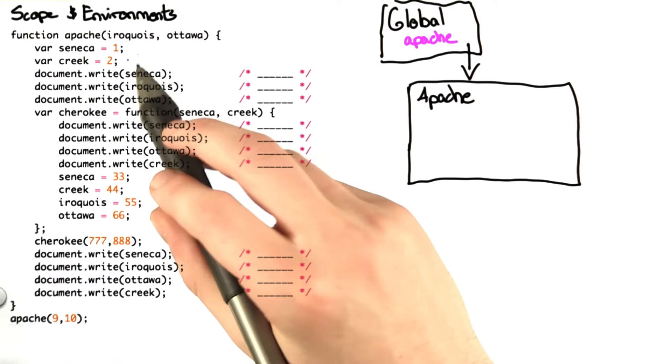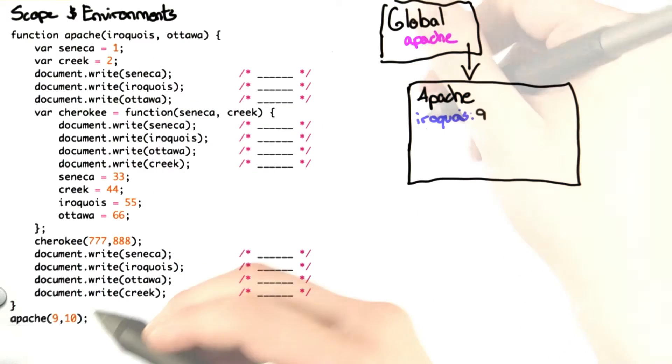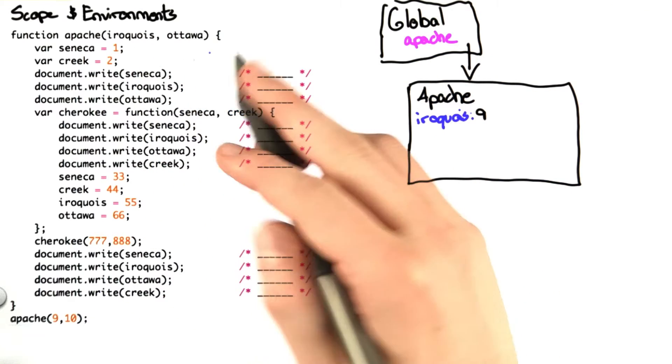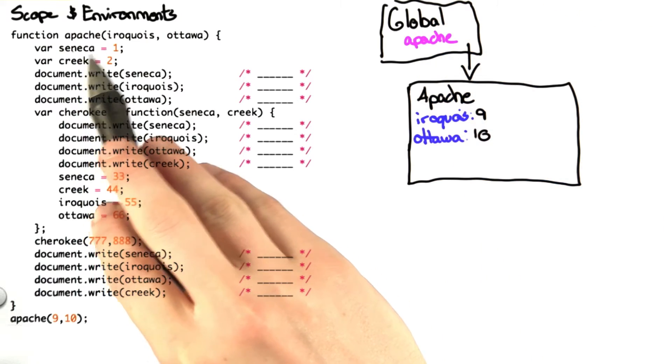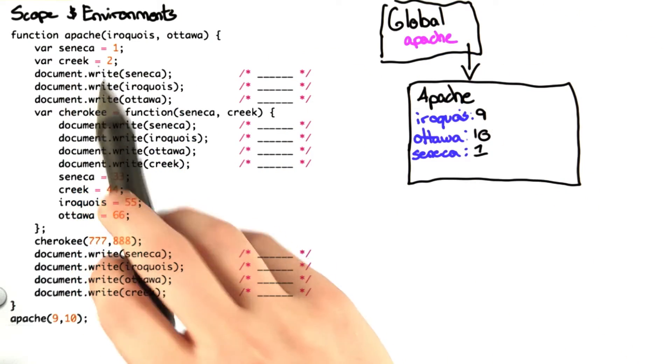The inputs were 9, which corresponds to Iroquois. The second was 10, which corresponds to Ottawa. We then set Seneca to 1, and we declare and set Creek to 2.